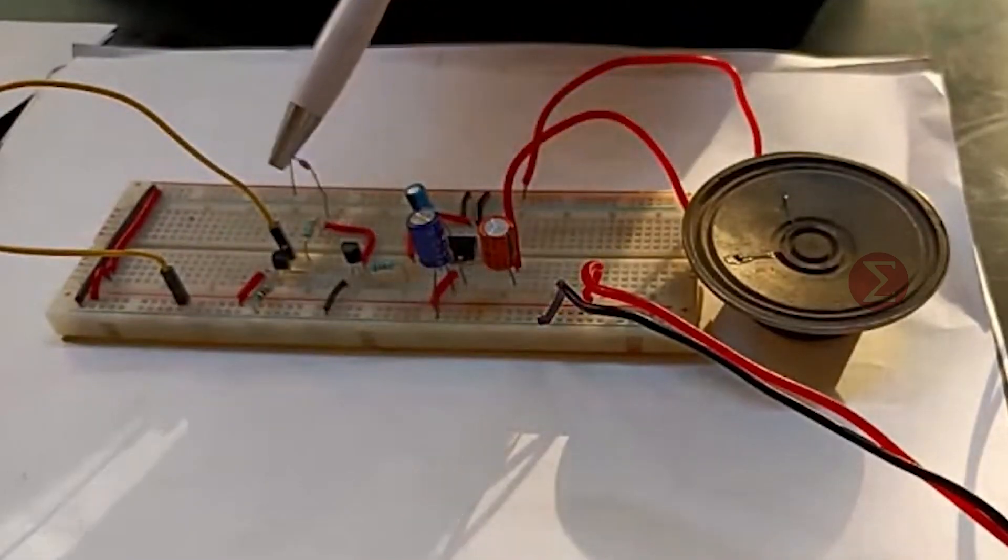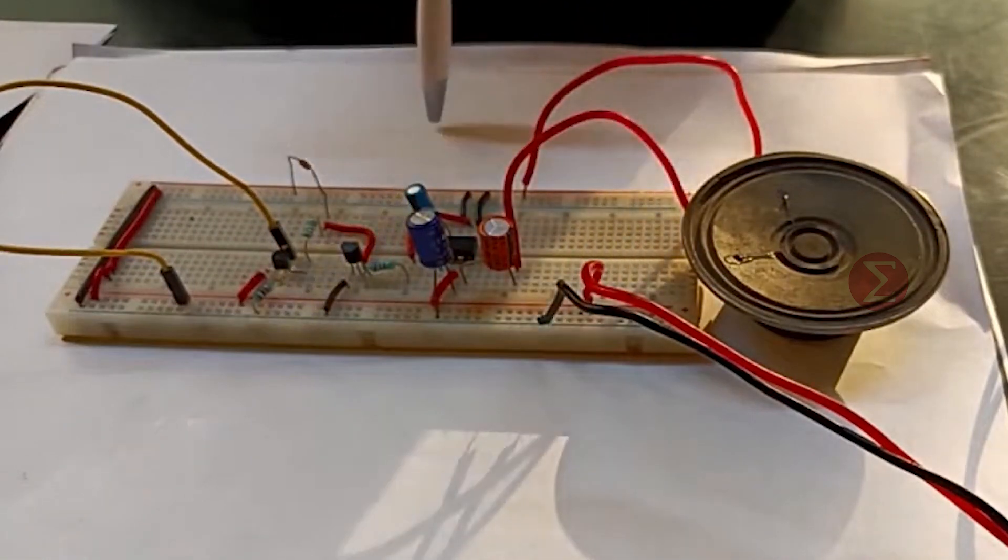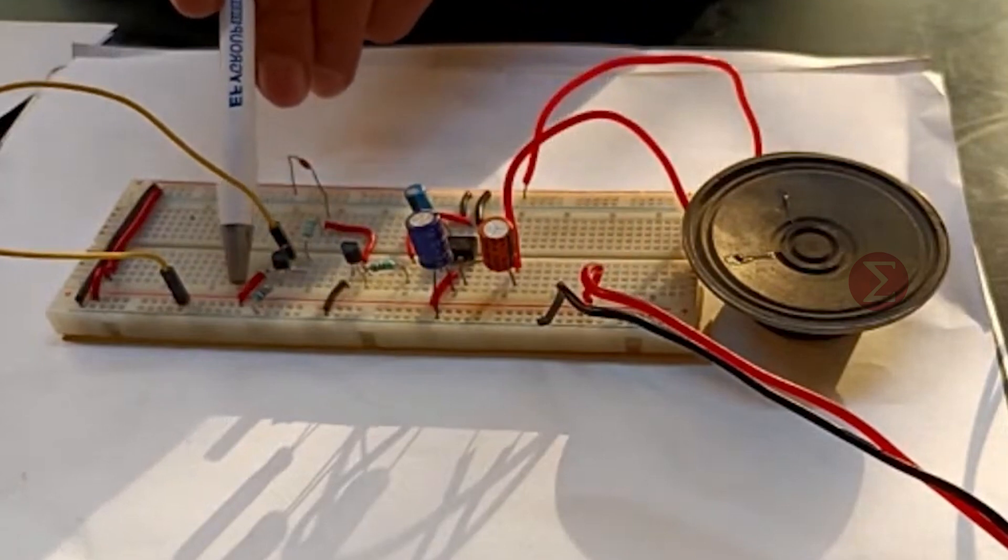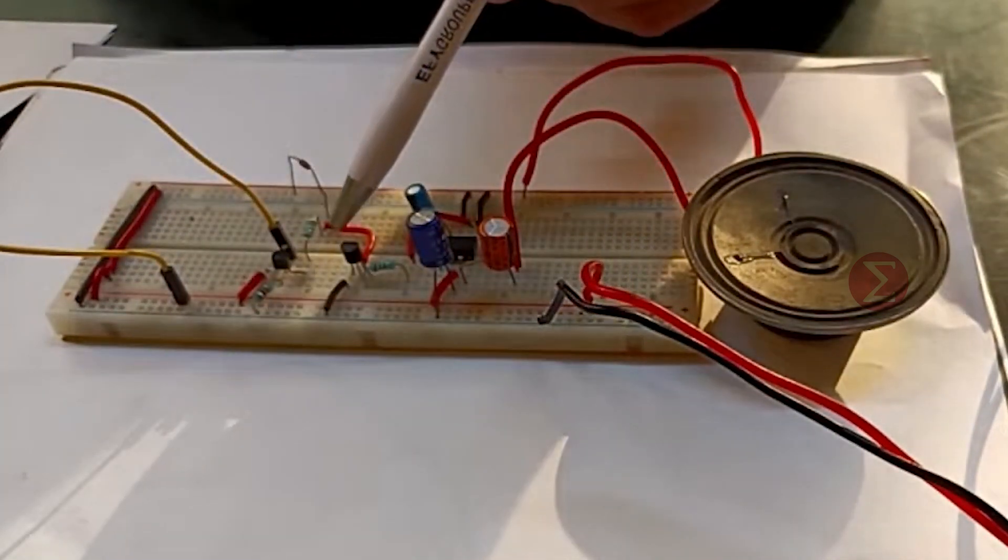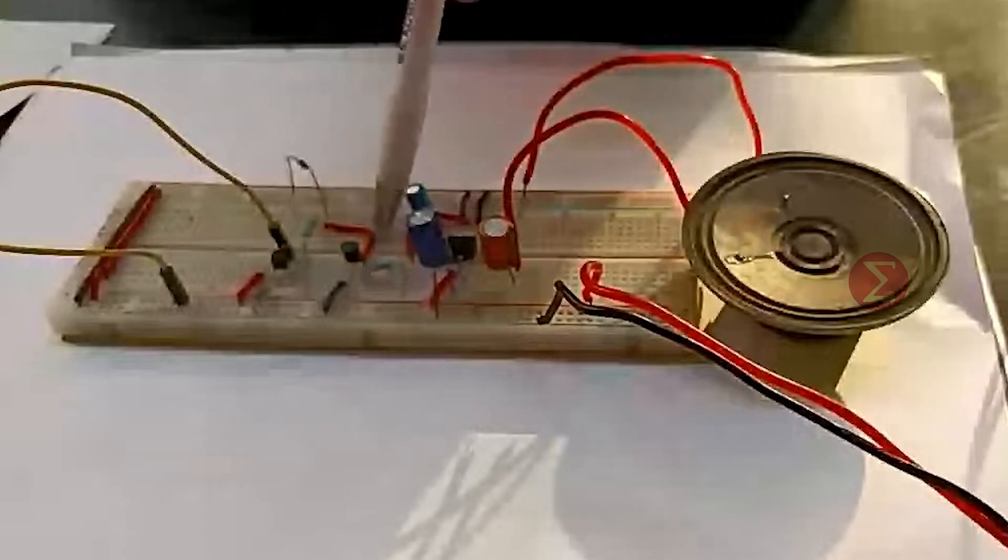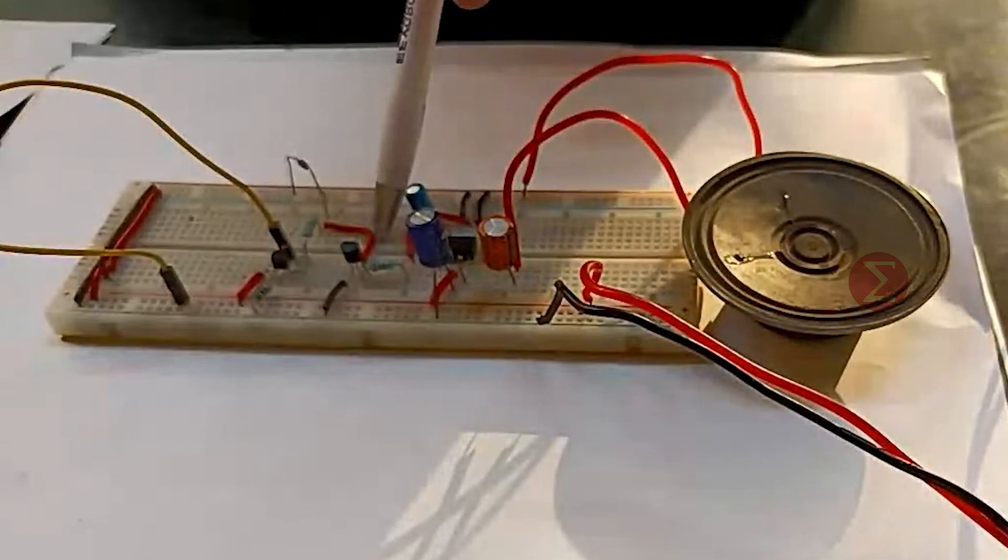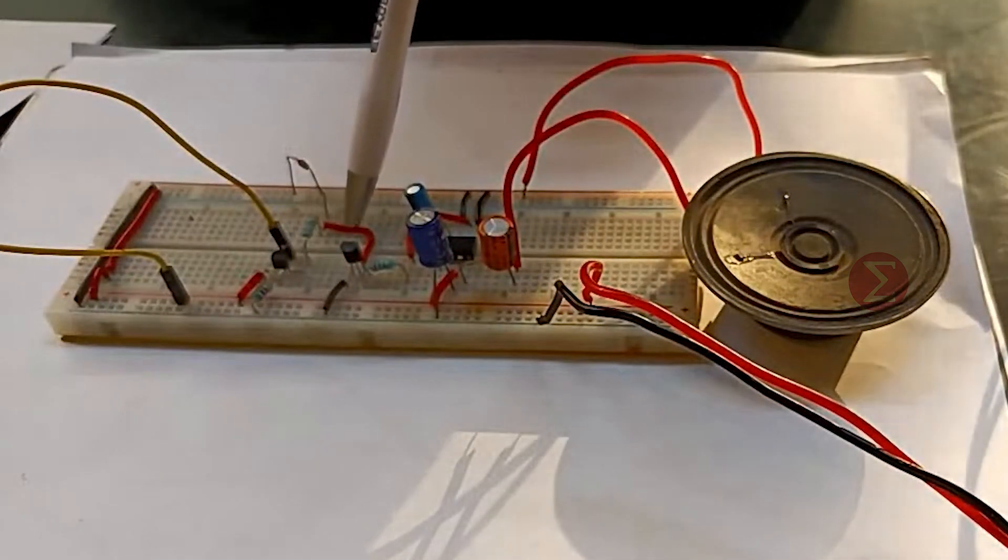A resistor is connected to the base of the PNP transistor and the other end of the resistor is grounded. Emitter is connected to a positive power supply. A resistor and a Zener diode are connected to the collector lead. The Zener diode will provide 3.1V to the UM66 IC so that the melody IC is enabled.